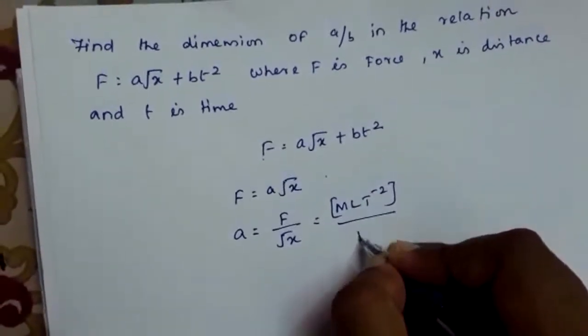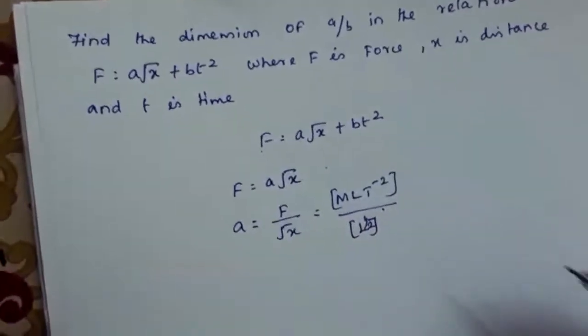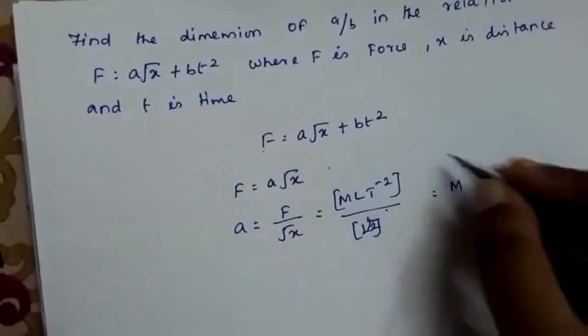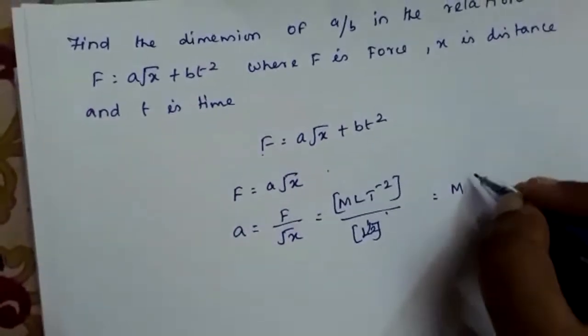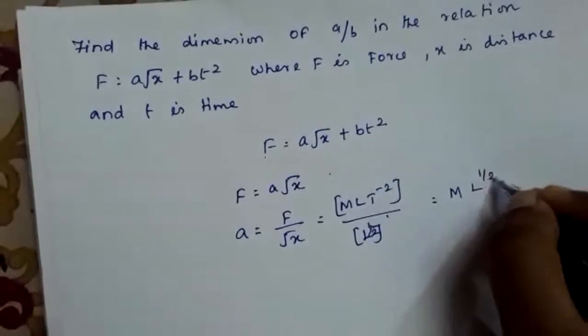Now this can be written as M... taking the denominator to the numerator, it is 1 minus half, so it is L^(1/2)T⁻².